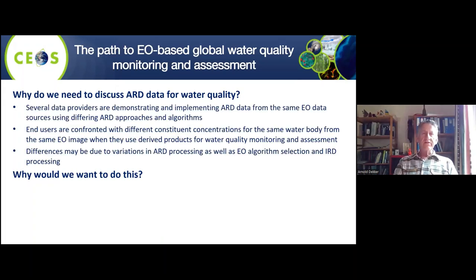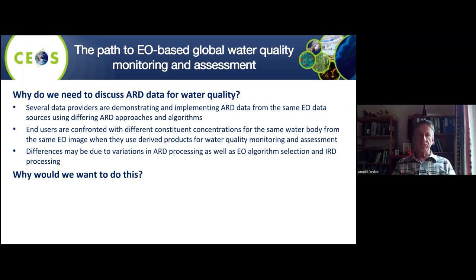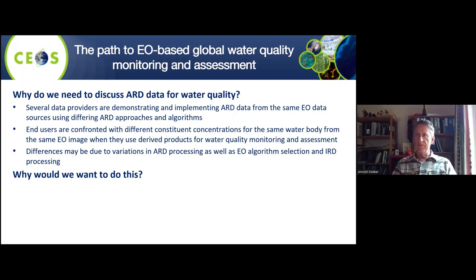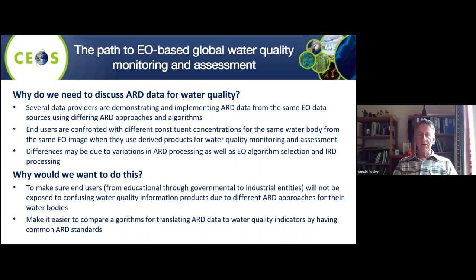One of the reasons for establishing these global metadata standards is that at a certain moment, multiple providers of Earth observation data were, for instance in some lakes in Africa, providing different forms of Earth observation data from the same satellite but reaching different conclusions. If you don't know how they processed the data, you can't compare the results. That's one of the main reasons for saying we must have global, acceptable metadata standards — we must avoid confusion with end users and ensure they get consistent information.